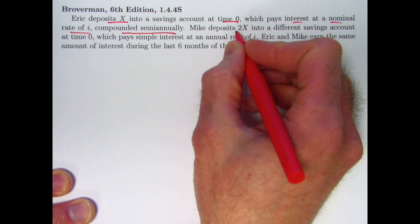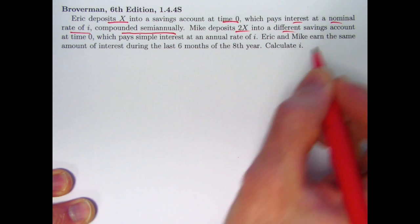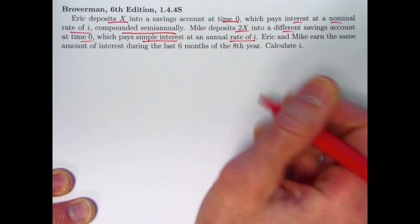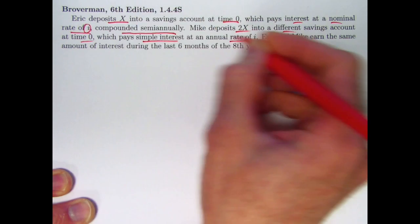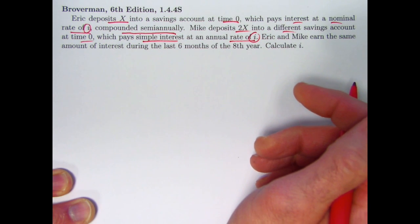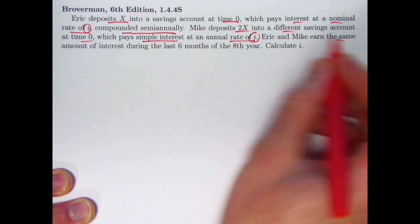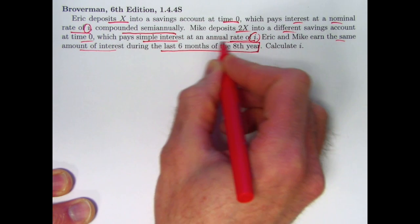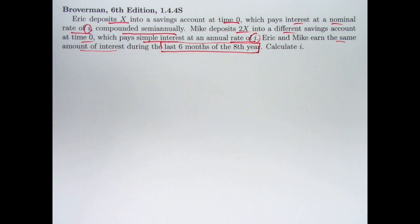Here's the problem. Eric deposits X into a savings account at time zero, which pays interest at a nominal rate of i. And Mike deposits 2X into a different savings account at time zero, which pays simple interest at the same rate i. Eric and Mike earn the same amount of interest during the last six months of the eighth year. Calculate that unknown i.